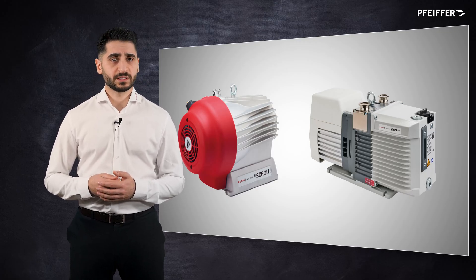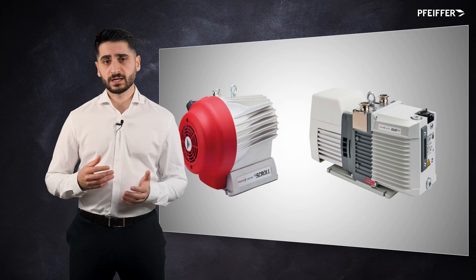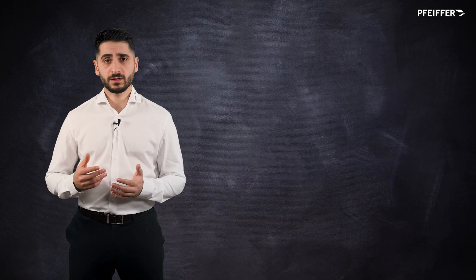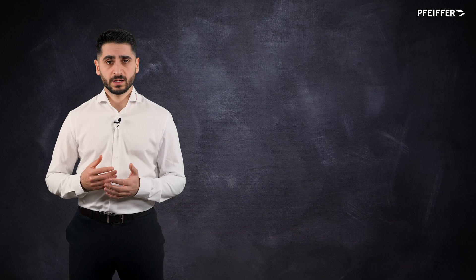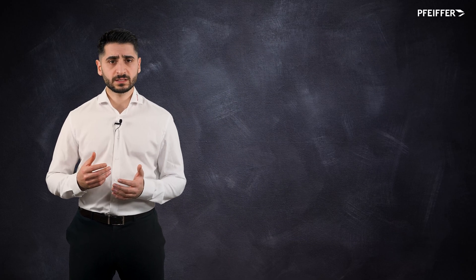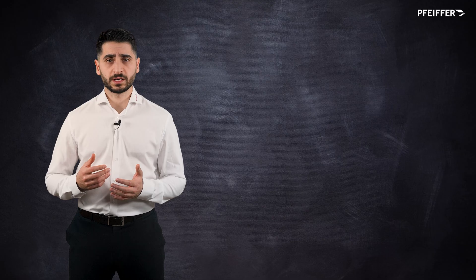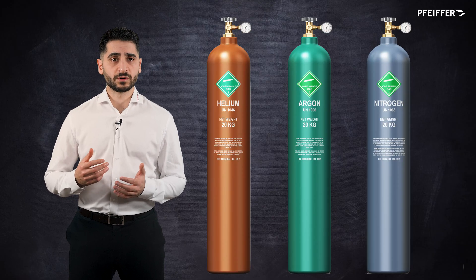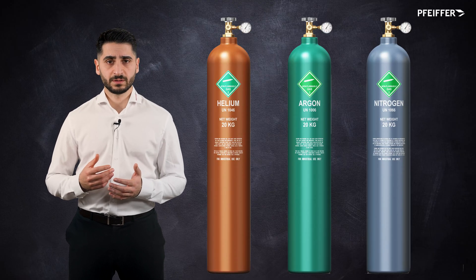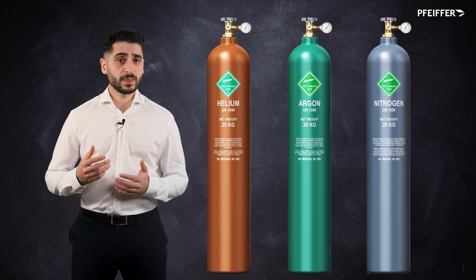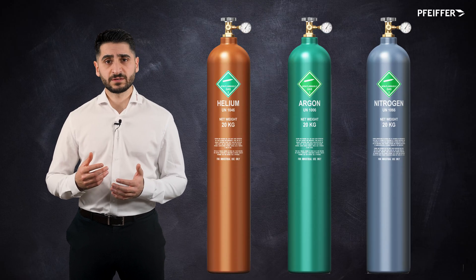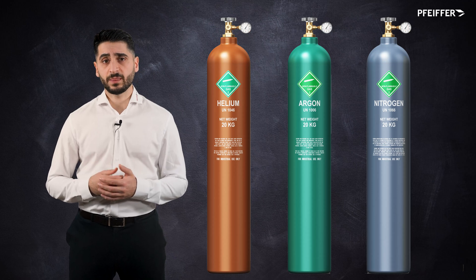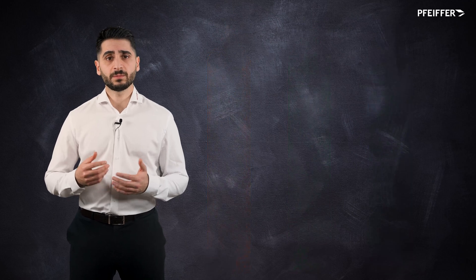Common gases used as gas ballast include atmospheric air, nitrogen, and dry gases. In some applications, inert gases like helium or argon are employed for a cleaner environment. The choice depends on the specific requirements of the vacuum system and the gas being pumped.